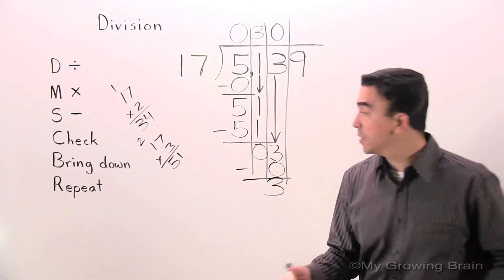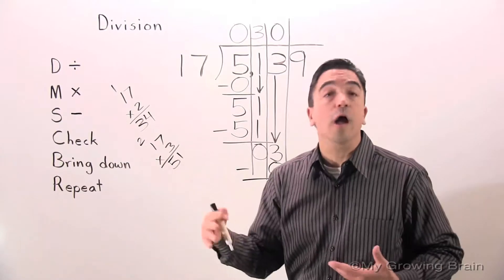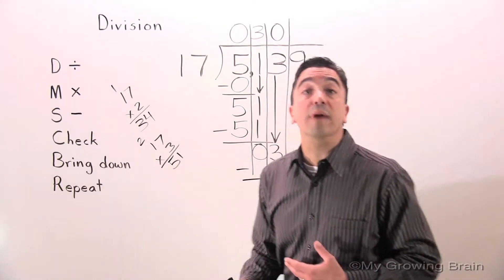Next step, check. 3 is less than 17. Keep on going. Bring down.